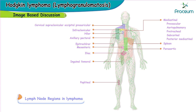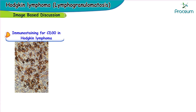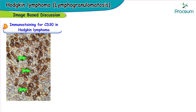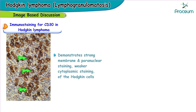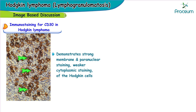Here is an image immunostained for CD30 in Hodgkin's lymphoma. You can see clearly how immunostaining for CD30 demonstrates strong membrane and paranuclear staining, and a weaker cytoplasmic staining of Hodgkin's cells.